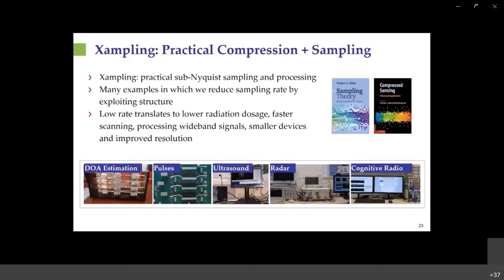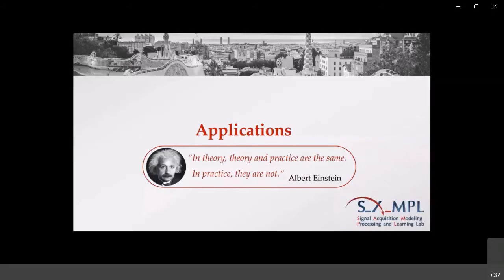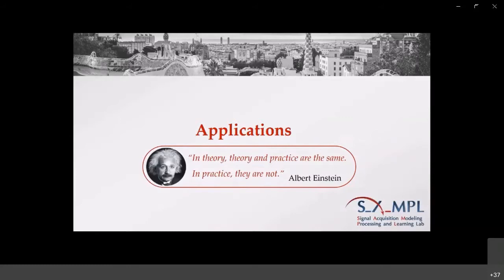Combining the analog and digital ideas leads to a general framework for sub-Nyquist sampling based on structure, applicable in a wide variety of systems. The prototypes and systems developed based on these ideas are shown on the slide. In our books on sampling theory and compressed sensing, we go into much more detail on both the theory and the hardware. Despite the quote attributed to Einstein that in theory, theory and practice are the same but in practice they are not—if you take practice into account in developing the theory, the theory can actually work well in practice.